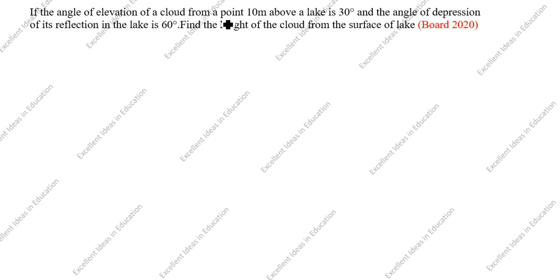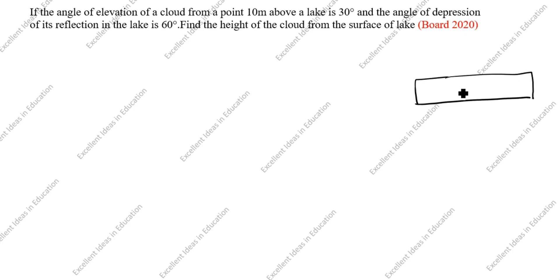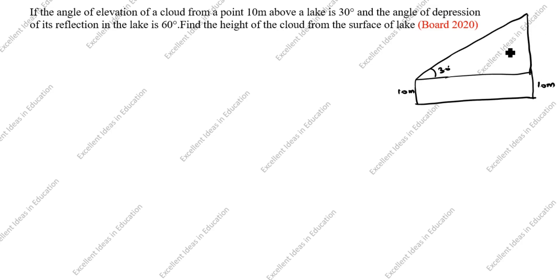If the angle of elevation of a cloud from a point 10 meters above a lake — we will draw the lake, this is 10 meters above the lake, so we write this is 10 meters, this is also 10 meters — is 30 degrees. So this is 30 degrees, now we will draw and join the line. Next, the angle of depression of its reflection in the lake is 60 degrees.